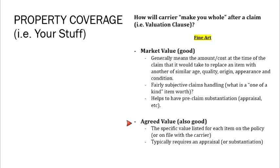An alternative is agreed value, where you agree with the insurance company at the time the policy is written on what the items are worth — say $100,000. Regardless of what the market says at the time of claim, assuming complete loss, you get $100,000 based on what you agreed upon when the policy was written. To get agreed value, there generally needs to be some sort of substantiation — the insurance carrier won't agree unless they have evidence via appraisal, schedule, or receipt confirming the item's worth.